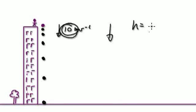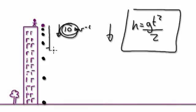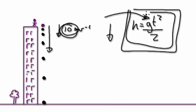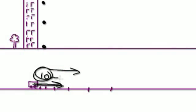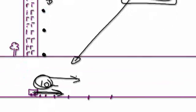When you're up on the building, the formula is h equals gt squared over 2. This is the formula you can use to work out the distance traveled after t amount of seconds. Down here with the car, you can actually recycle this same formula.